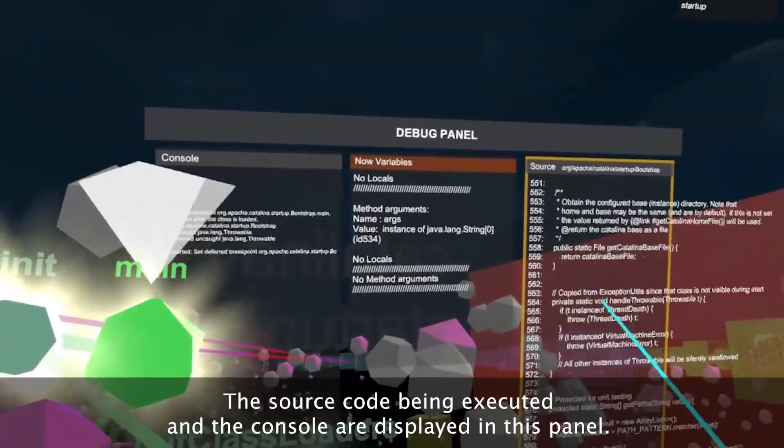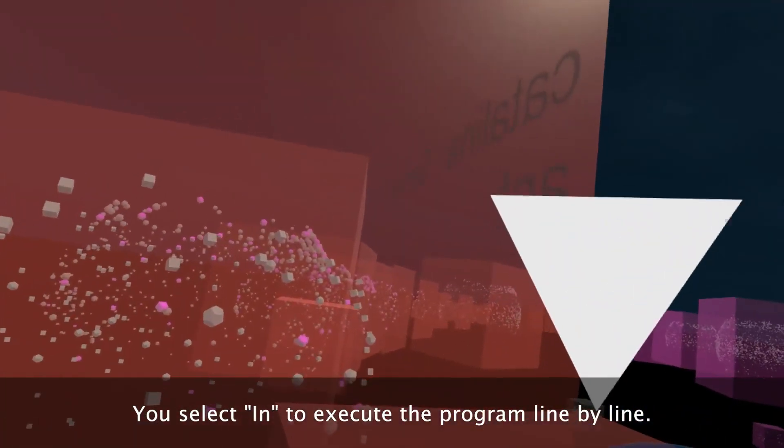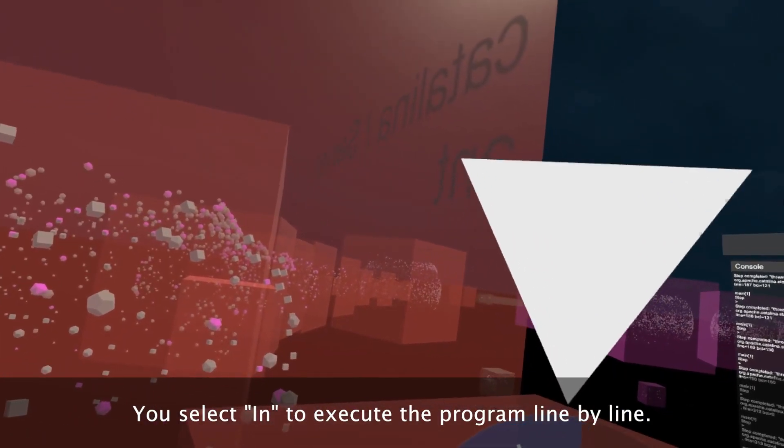The source code being executed at the console is displayed in this panel. You select step to execute the program line by line.